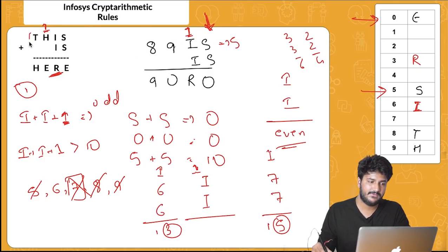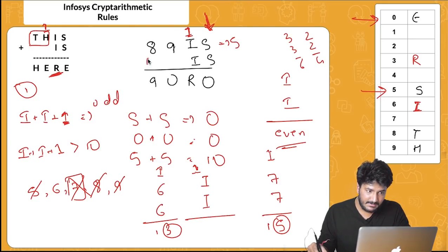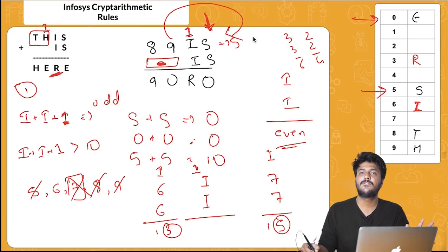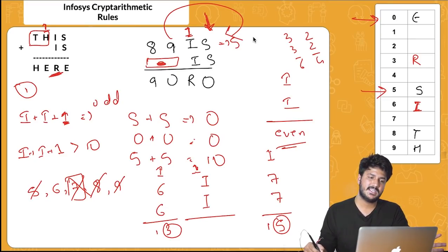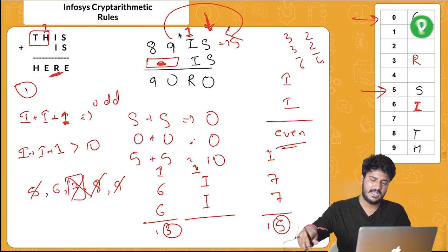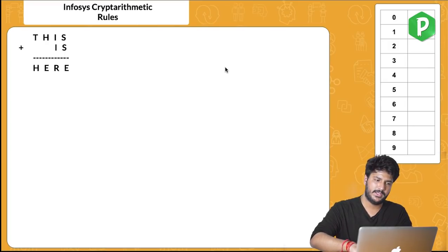The key insight in this problem was starting from the leftmost blank column — this is a major hint whenever there are blank spaces. The carry logic flowing from left to right is what drives the solution. Let's move on to the next question.